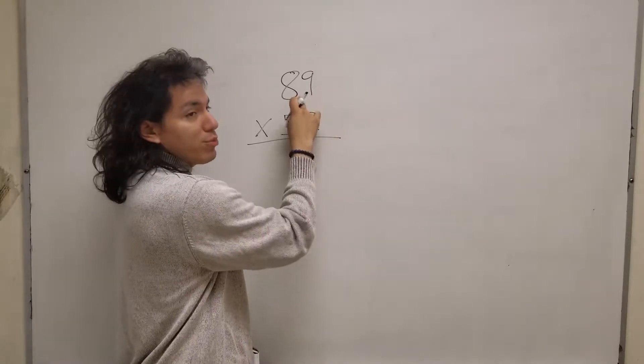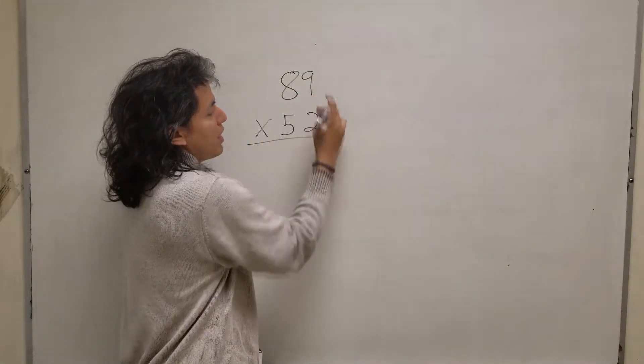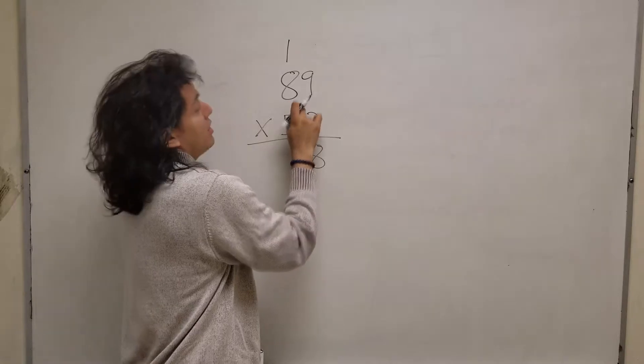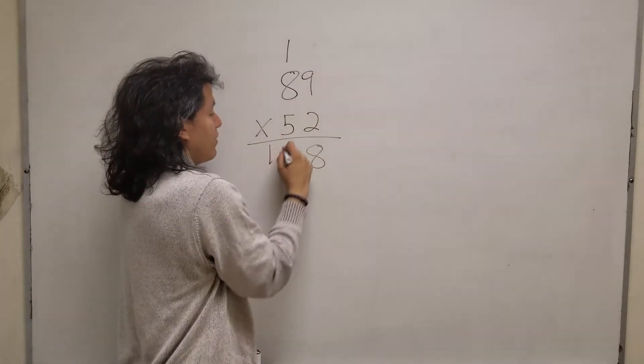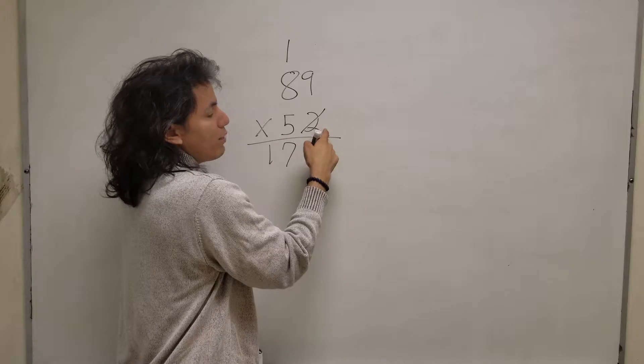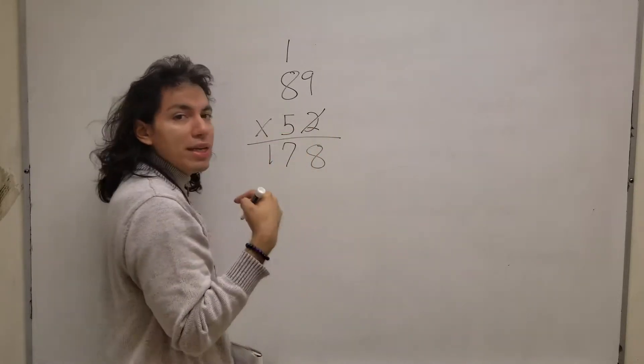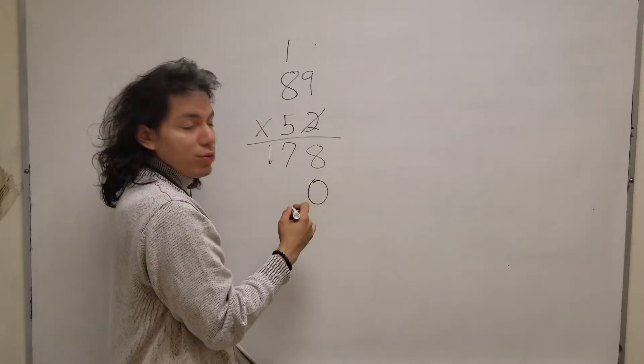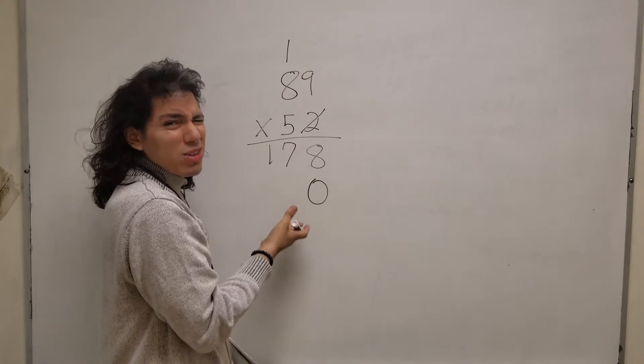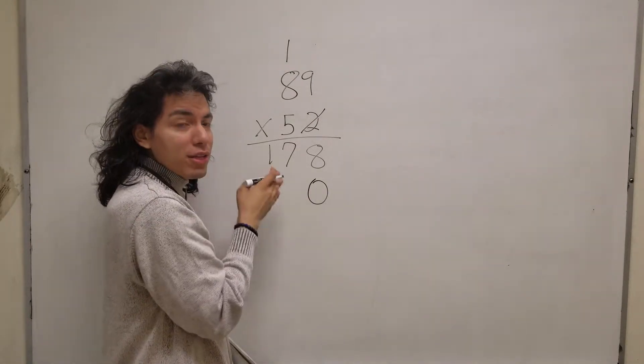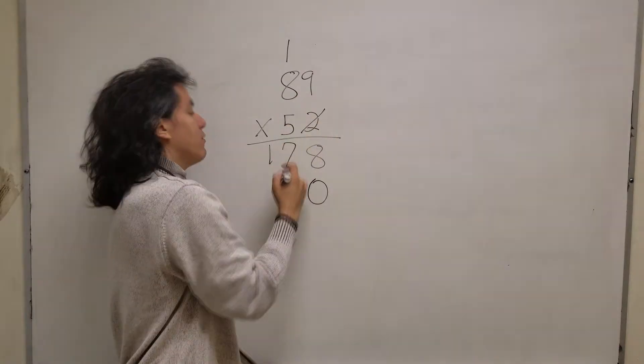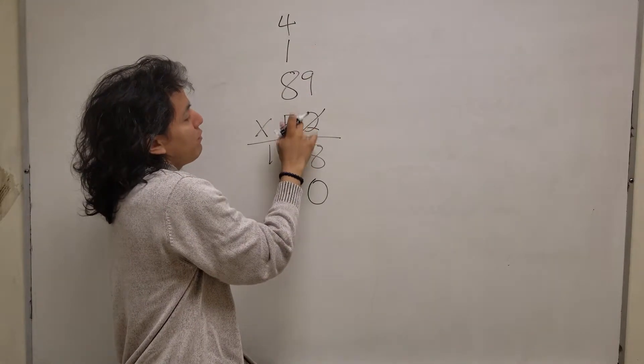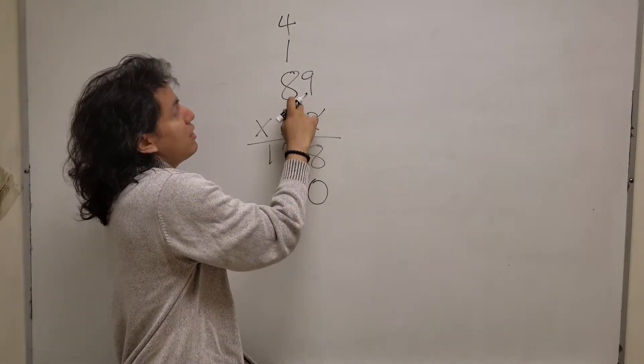So 2 times 9 is 18 and you carry the 1. 2 times 8 is 16 plus 1 is 17. Now I put a slash here, this is just a mental note for me to remember, and you put 0 as a placeholder. You can leave this blank but it looks ugly when it comes to actually calculating everything, so that's why I put 0 as a placeholder. 5 times 9 is 45, so you put the 5 here and you put the 4 on top. 5 times 8 is 40 plus 4 more is 44.